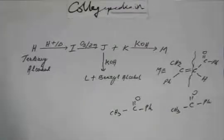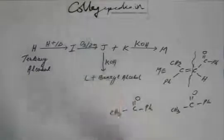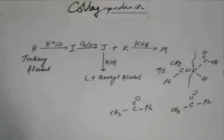Fine? Alright, so K is acetophenone. This is clear? Now J, J is something and that something you are adding KOH and you are getting an alcohol. This is benzyl alcohol and you are getting L which you don't know.